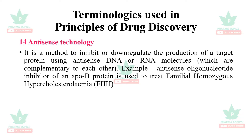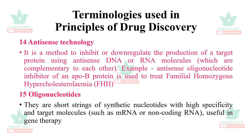Next is antisense technology. It is a method to inhibit or down-regulate the production of the target protein using antisense DNA or RNA molecules which are complementary to each other. Example: the antisense oligonucleotide inhibitor of APOB is used to treat familial homozygous hypercholesterolemia, which is a rare disorder.